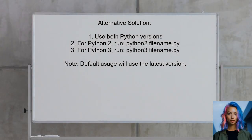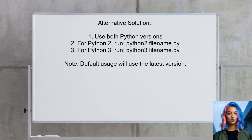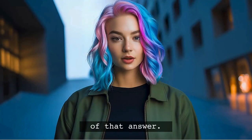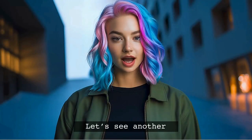One alternative approach is to avoid downgrading Python altogether. Instead, you can use both versions on your system. For files that need Python 2, simply use the command 'python2' followed by your file name. For Python 3, use 'python3' with your file name. This way, you can keep the latest version as the default without the hassle of downgrading.